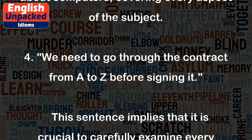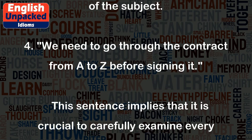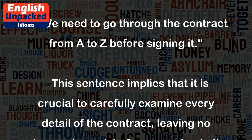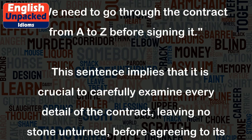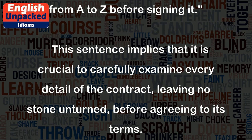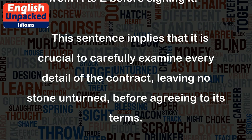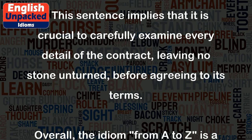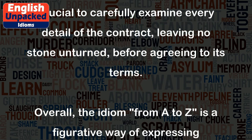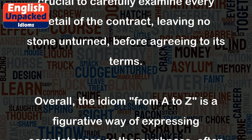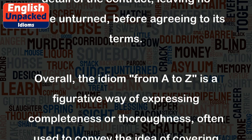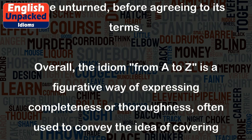Example 4: 'We need to go through the contract from A to Z before signing it.' This sentence implies that it is crucial to carefully examine every detail of the contract, leaving no stone unturned, before agreeing to its terms.